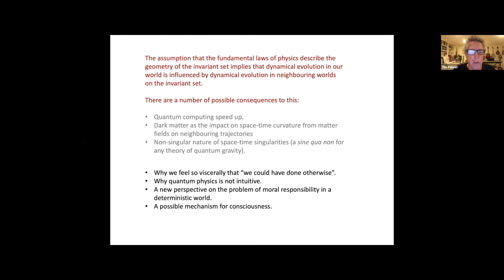I want to briefly discuss a couple of things. Why do we feel so viscerally that we could have done otherwise, that we have this feeling of free will, which for a determinist kind of makes no sense? If the world is deterministic, then the idea that we could have done otherwise would be inconsistent with determinism. But nevertheless we all feel that we have this sense that we could have done otherwise. So why do we feel this? Why is it that we feel quantum physics is non-intuitive? And then I want to say possibly a couple of words on the problem of moral responsibility in a deterministic world, which is always one of the most difficult problems if one believes in determinism. Finally, a possible mechanism for consciousness.